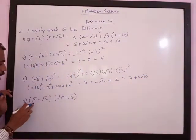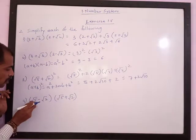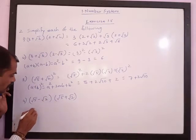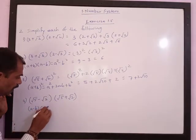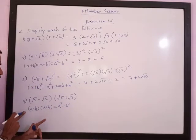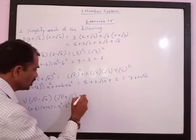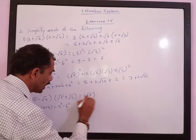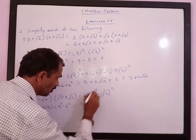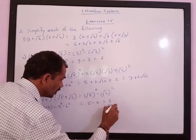The last question is (root 5 minus root 2) multiplied by (root 5 plus root 2). The first numbers are the same and the second numbers are the same, only the signs are different. This is of the form (a minus b)(a plus b) which equals a squared minus b squared. So this equals root 5 squared minus root 2 squared, which is 5 minus 2, and the answer is 3.